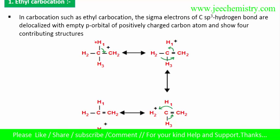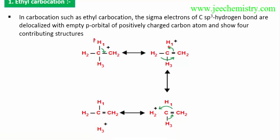In this carbocation, this hydrogen — three alpha hydrogens — shift to this position. This becomes a plus charge. These electrons will move and slip to this position. Actually, let me draw the structures properly: H1, H3, CH2 plus charge.